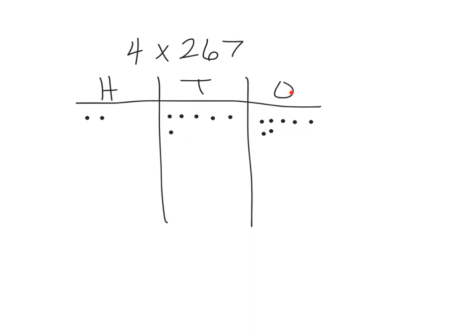Now, four times 267 means I need four copies of this. So I'm going to do that real quick. I'm going to do another copy. There's another 267, so that's two copies. Now I have another copy.